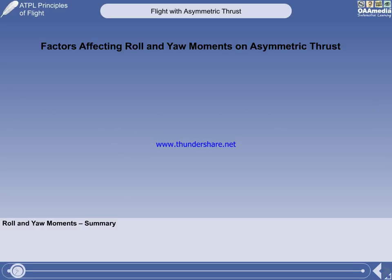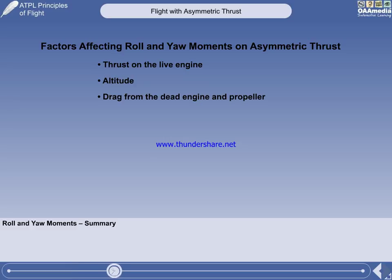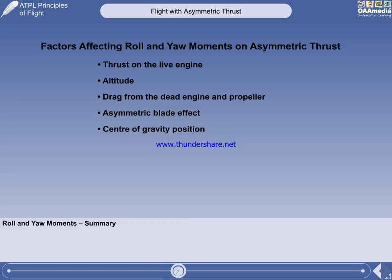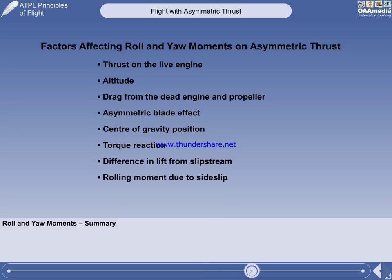We can summarize the factors affecting the rolling and yawing moments when on asymmetric thrust as follows: thrust on the live engine; altitude; drag from the dead engine and propeller; asymmetric blade effect; center of gravity position; torque reaction; difference in lift from slipstream; rolling moment due to side-slip; weight; and finally, the vital element of IAS, which determines the amount of control the pilot has over the aircraft.